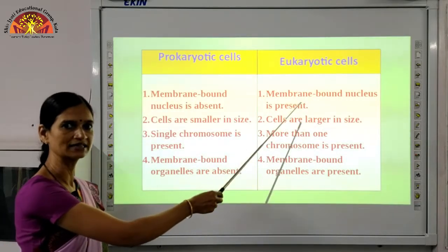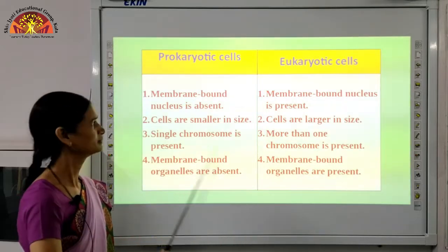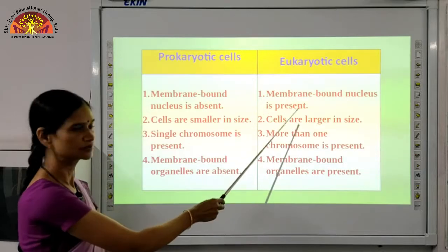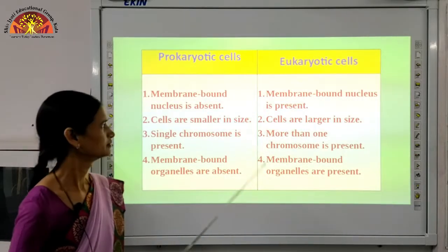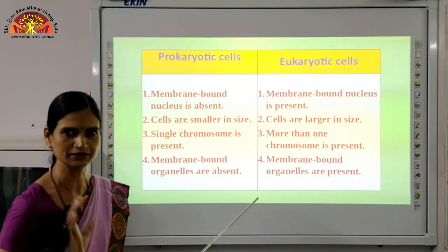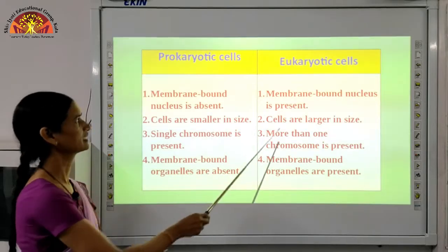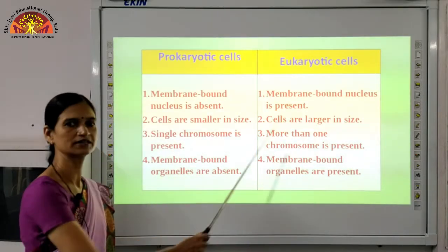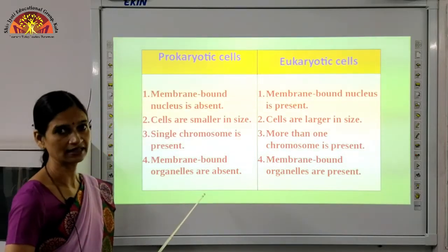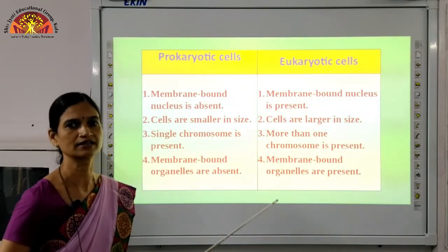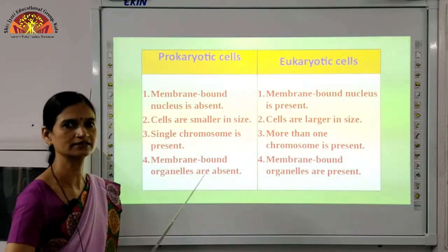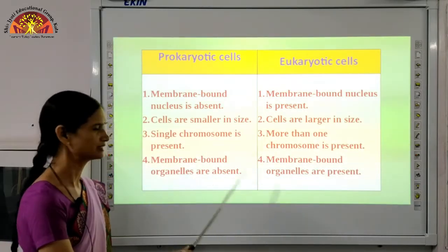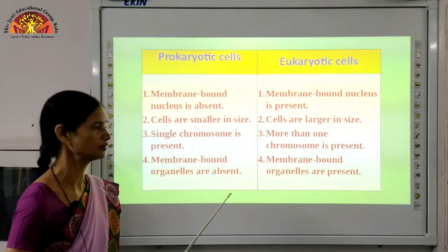Eukaryotic cells are advanced types of cells. In eukaryotic cells, a membrane-bound nucleus is present — a well-defined nucleus bounded by a membrane. Prokaryotic cells are smaller in size whereas eukaryotic cells are larger. Only one chromosome is present in prokaryotic cells, whereas more than one chromosome is present in eukaryotic cells. Membrane-bound organelles like mitochondria, lysosomes, and chloroplast are absent in prokaryotic cells, whereas eukaryotic cells have proper membrane-bound cell organelles.